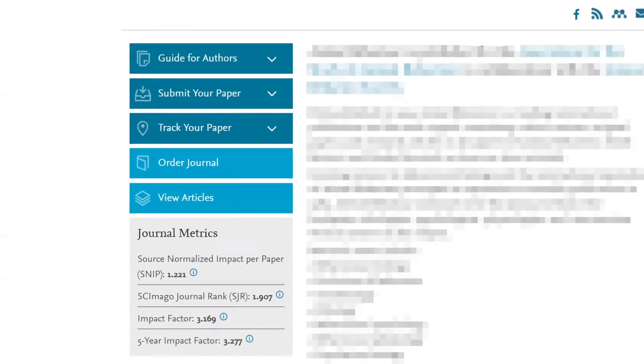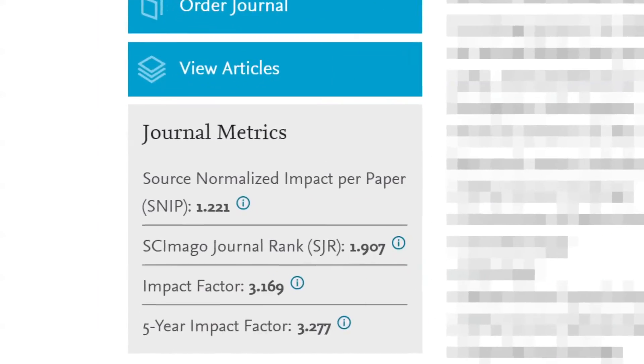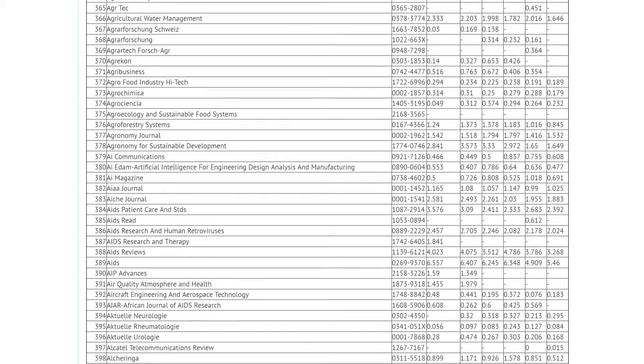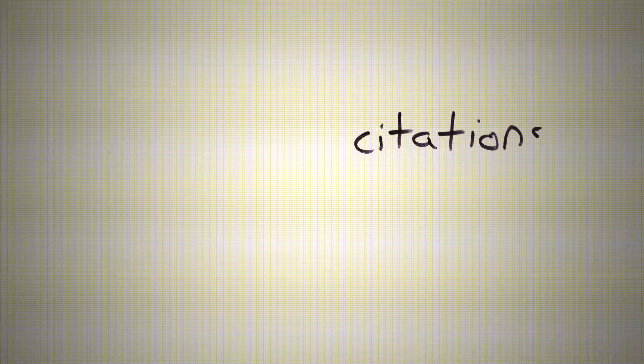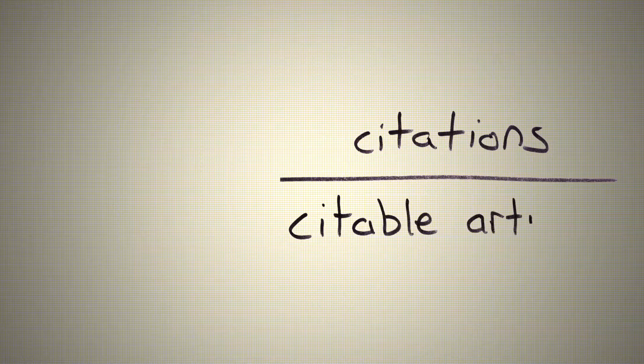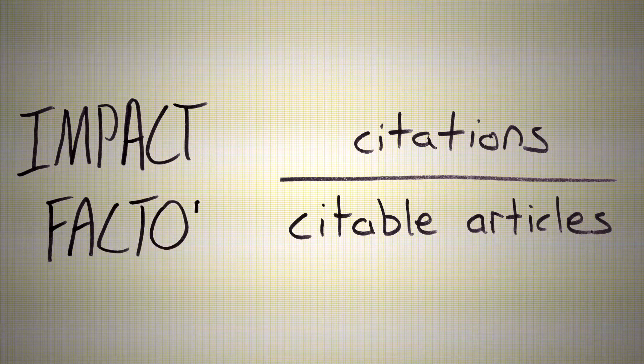However, citations are also used to market the journals that publish scientific papers. A private company called Thomson Reuters rates scientific papers according to the average number of citations. They do this by dividing the number of citations by the number of citable articles for the past two years. This is called the impact factor.